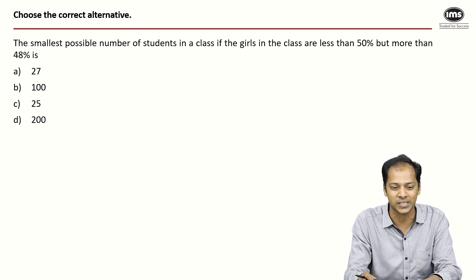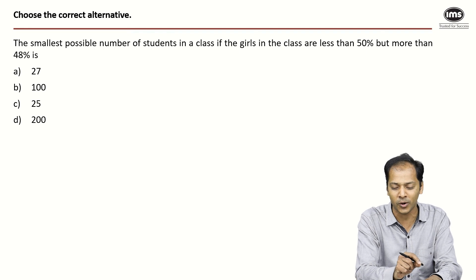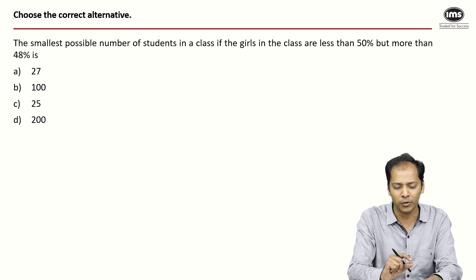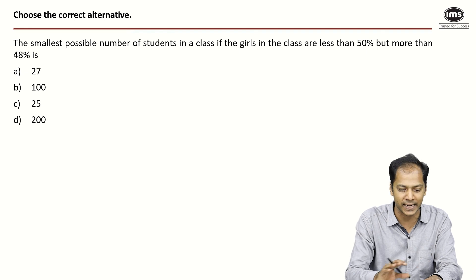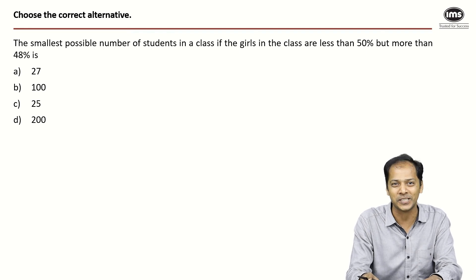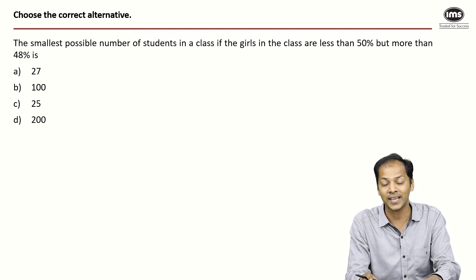There was a small trick. It was based on the concept of what kind of denominators or totals or base values could give you what kind of percentages. The question asks: the smallest possible number of students in a class if the girls in the class are less than 50% but more than 48%.